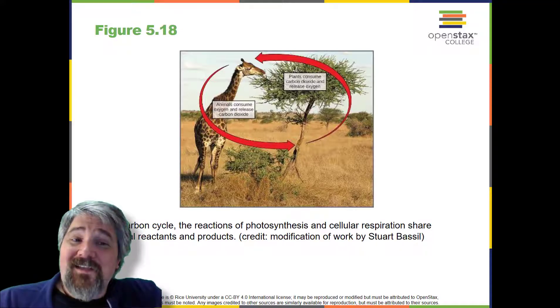Both organelles use electron transport chains to generate the energy necessary to drive other reactions. Photosynthesis and cellular respiration function in a biological cycle, allowing organisms to access life-sustaining energy that originates millions of miles away in a star.